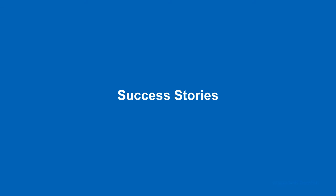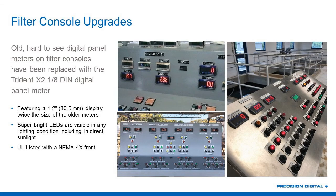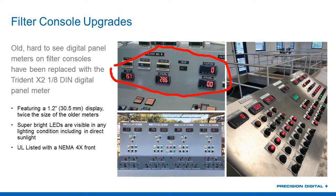Mark, why don't you take us through some of our water and wastewater success stories and application photos? The first one we'll talk about is filter console upgrades. This is usually in sand filters — where we see old, hard-to-see digital panel meters on filter consoles that have been replaced by our Trident X2. The Trident X2 is really just two times the size of a regular Trident. If we take a look at some of the Trident X2s in this panel, you can see three of them here — very bright meters that can be seen from about 30 feet away, even in direct sunlight. They're very often used in filter console upgrades like we see here.